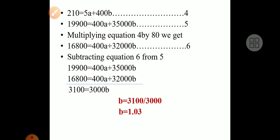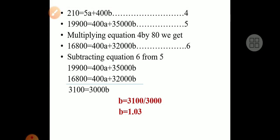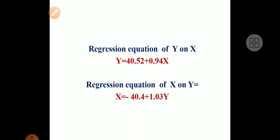Multiplying equation one by 42, we get 16800 equals 210a plus 8820b. Subtracting equation 3 from equation 2 gives 3100 equals 3280b, so b equals 3100 divided by 3280, which gives b equals 0.94. Substituting b equals 0.94 back into equation one: 400 equals 5a plus 210 times 0.94, so 5a equals 400 minus 197.4 equals 102.6, giving a equals 20.52. Thus the regression equation of y on x is: y equals 40.52 plus 0.94x. Regression equation of x on y: x equals minus 40.44 plus 1.03y.